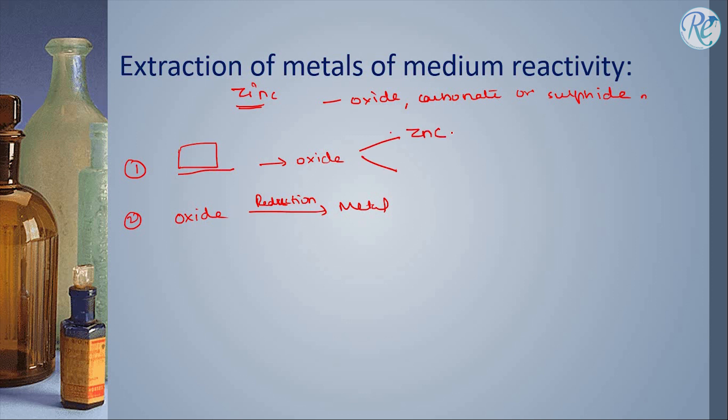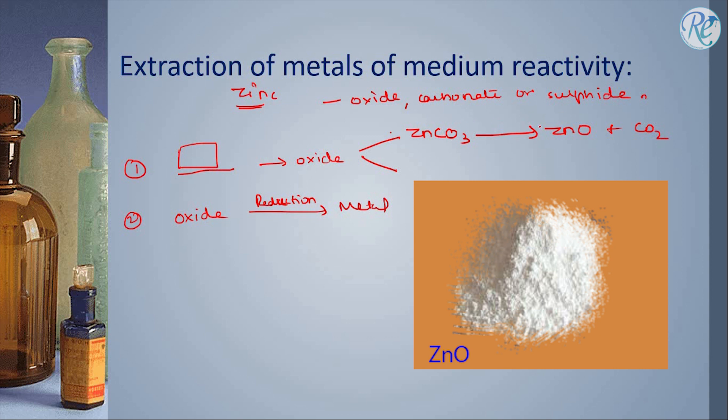If it is carbonate, for example zinc carbonate, then it is directly heated without the presence of oxygen and we get ZnO and CO2, and this step or this process is known as calcination.